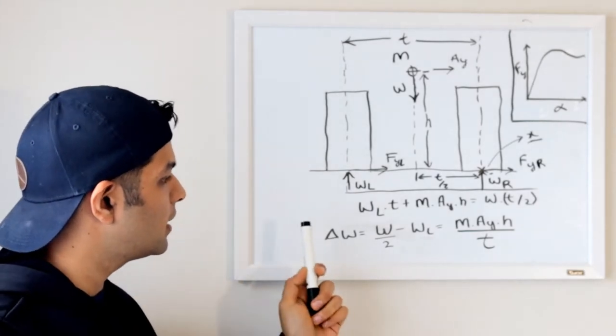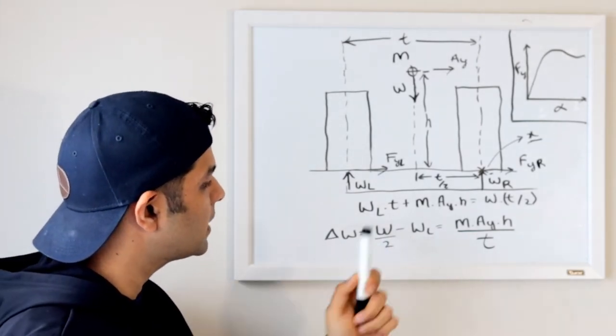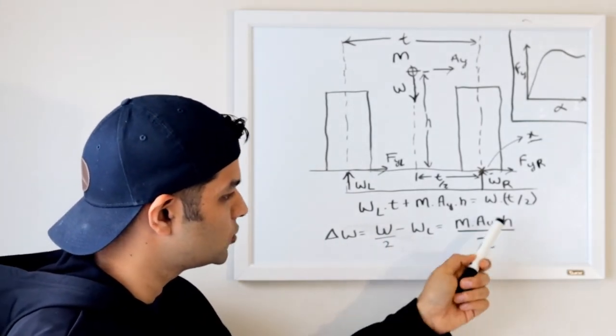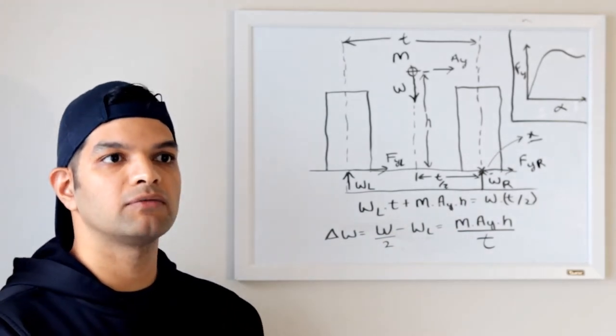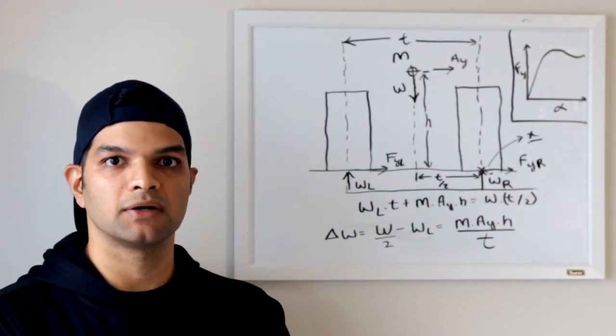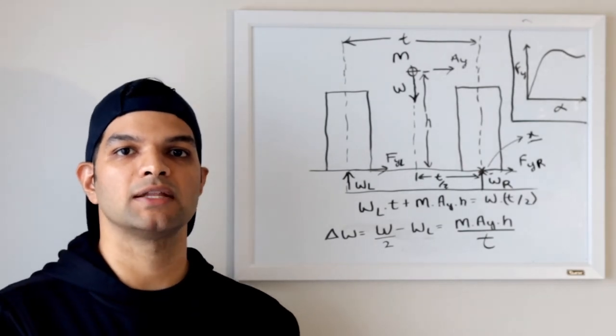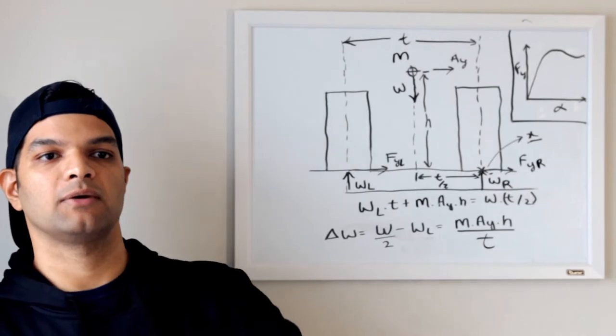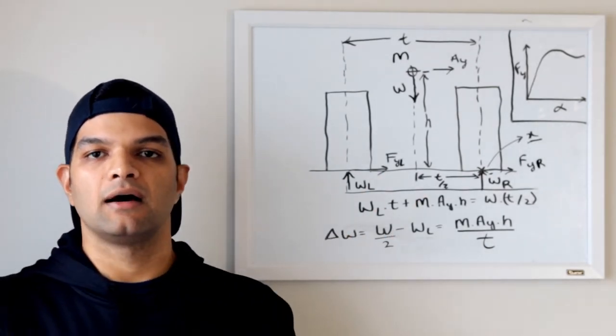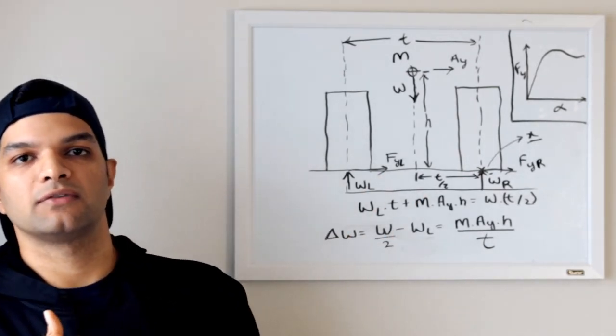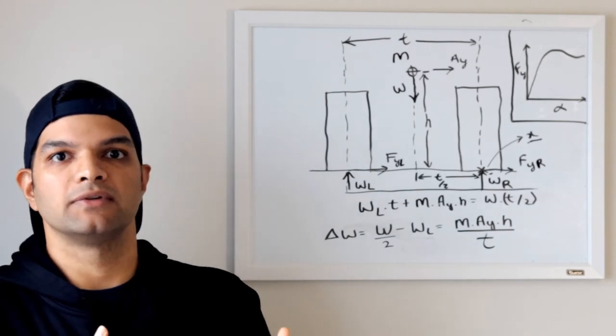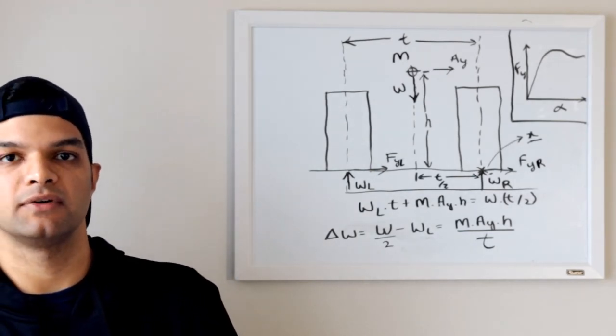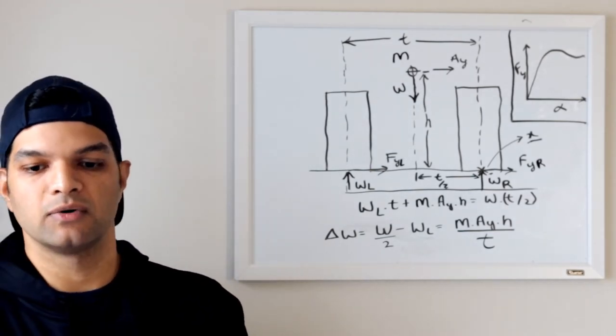The change in weight is given by W by 2 minus WL equals to this. Now, whenever we are turning a vehicle, like even in our regular cars, whenever we are making turns, we can feel because of inertia, we are going in the outward direction. If we are making a turn like this, we feel the load transfer and ourselves will feel moving on the outer side of the vehicle, on the outer wheel.